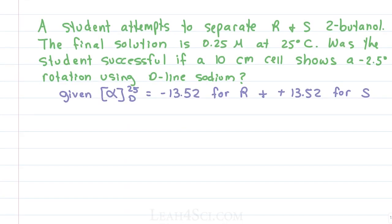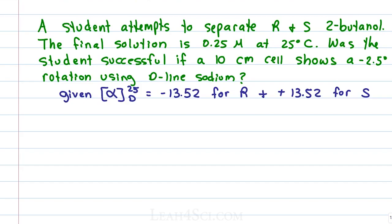Let's try an example. A student attempts to separate R and S 2-butanol. The final solution is 0.25 molar at 25 degrees. Was the student successful if a 10 centimeter cell shows a negative 2.5 rotation using the D-line of sodium? We're given the following information from a reference table and we want to figure out if the student was successful in separating between R and S. When you're given a problem like this, there's a whole lot of words and that makes it very confusing. What you want to do is see if you can pull out the numbers from the story and come up with a simple equation.